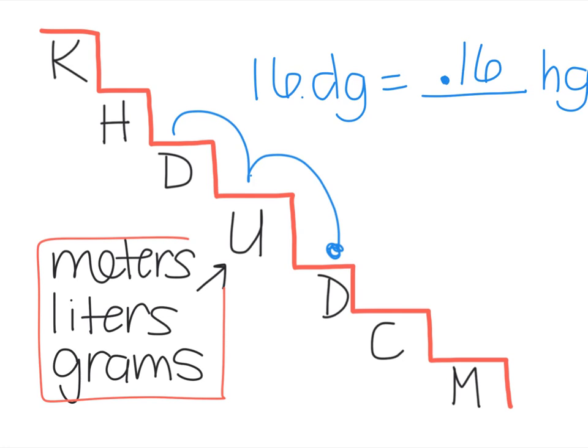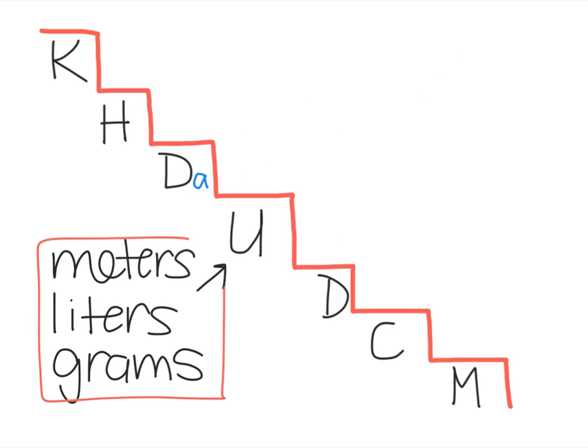I'm going to give you one right now, and I'd like you to try it on your own. Something I didn't say before, but I want to make sure you notice that deca and deci both have Ds, but deca actually is shown as DA and deci is shown as just a D. So be sure and keep that in mind when you do your work.